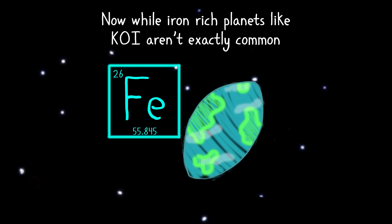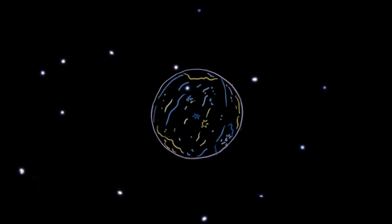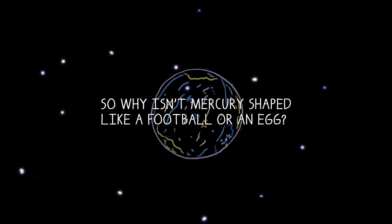Now, while iron-rich planets like KOI aren't exactly common, it is worth noting that our own Mercury is believed to be about 70% iron. So why isn't Mercury shaped like a football or an egg?